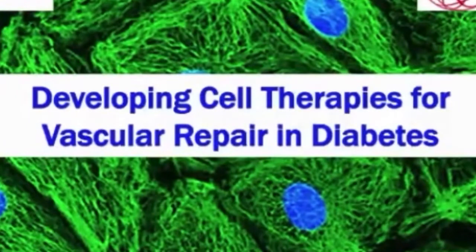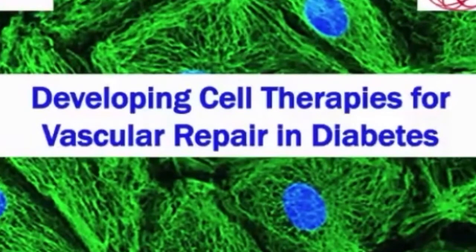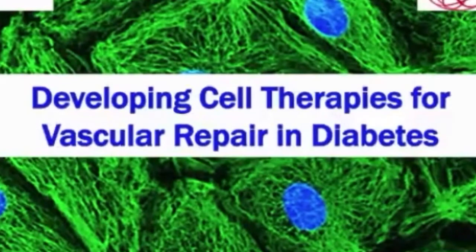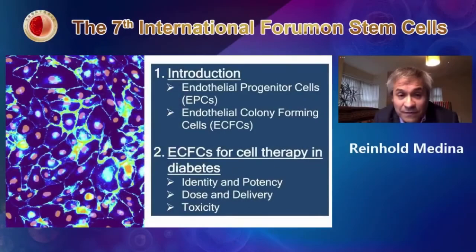We are based in Belfast and are developing new strategies to repair blood vessels, with particular interest in diabetes. Over the next 20 minutes, I'll talk about how we approach vascular repair for diabetes using the cells we work with in the lab — endothelial colony forming cells, or ECFCs. I'll give a brief introduction to endothelial progenitors, what ECFCs are, and why we want to apply them for diabetes.